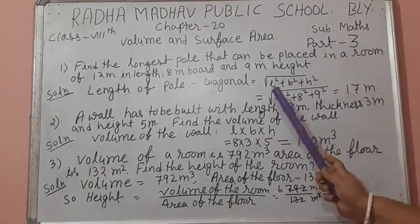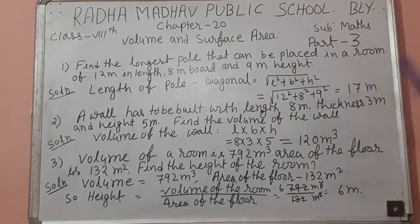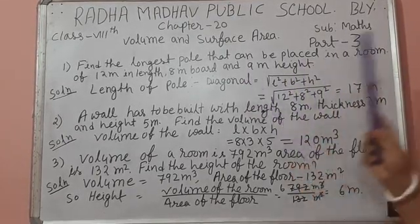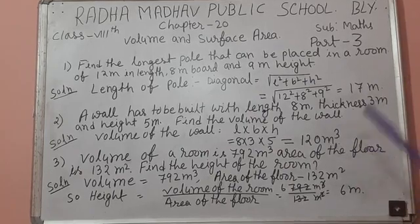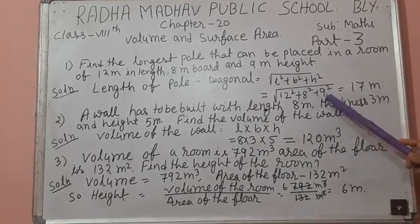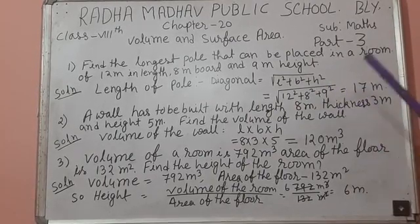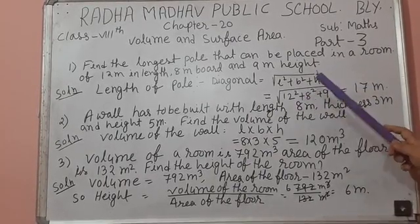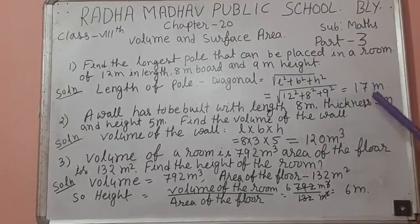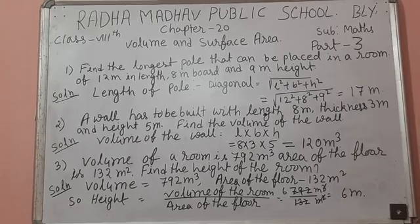So the formula is root over L squared plus B squared plus H squared. That means length is equal to 12, breadth is equal to 8, and height is equal to 9. After putting the numbers in the formula, we get 12 squared plus 8 squared plus 9 squared, which equals 17 meters. This is the length of the pole.